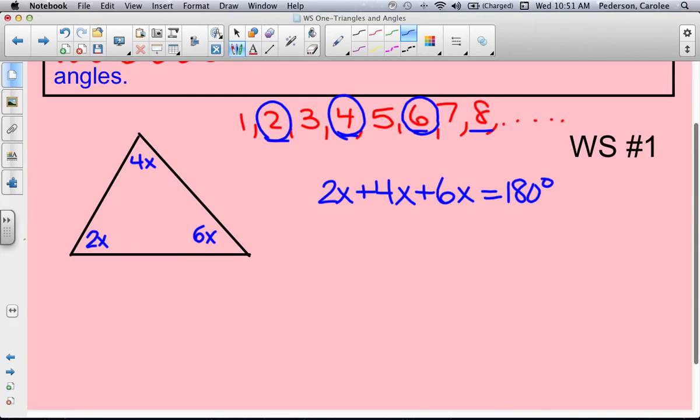Now we solve for x. So we're going to combine like terms. 2x plus 4x plus 6x is 12x. Then we're going to divide by 12. And we get x to be 15 degrees.